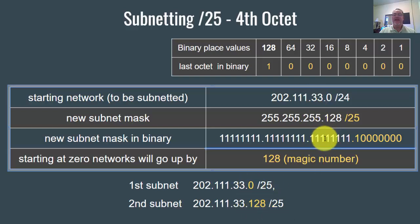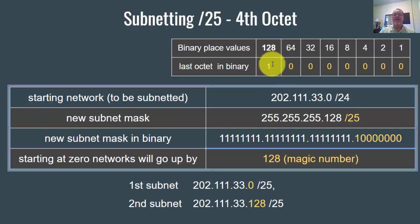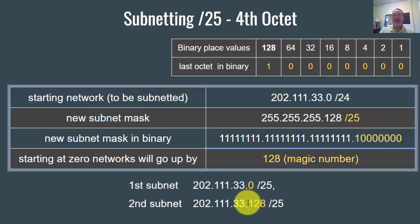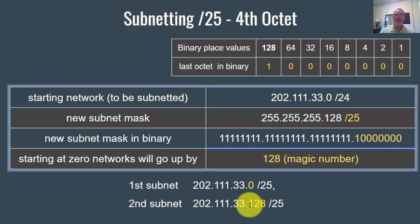The network is being defined by this last one, which I like to call the magic number — it tells you where the networks are going to be. The first network is at zero, and the next network is at 128. There's no other network going up by 128 because 128 plus 128 is 256, and then you've gone too far.